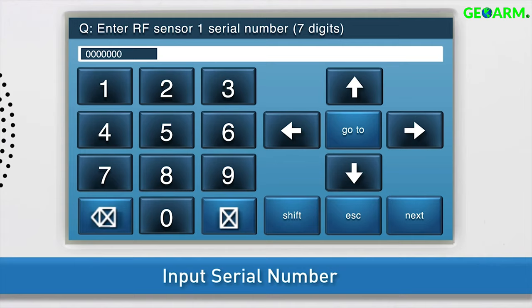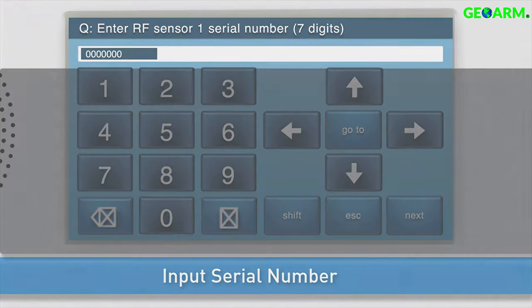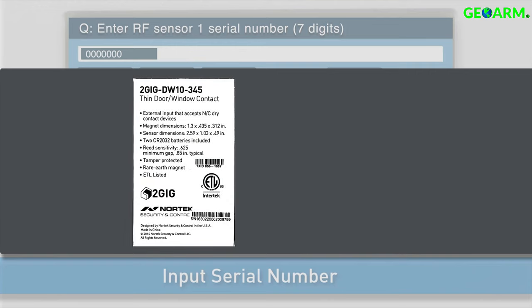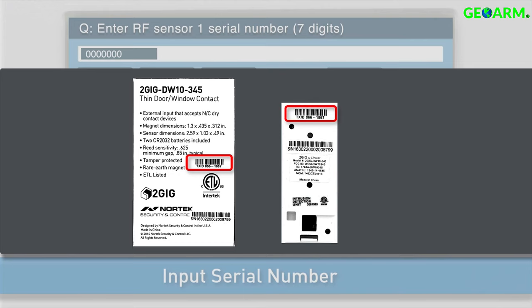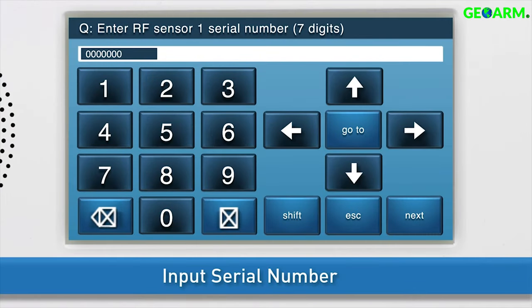Next, you'll want to input the serial number for the thin door window contact. You'll find the serial number on the sensor's box labeled as a TX ID number. The number is also shown on a sticker on the sensor itself. You can either add the serial number with the panel's on-screen keyboard or add it in wirelessly.